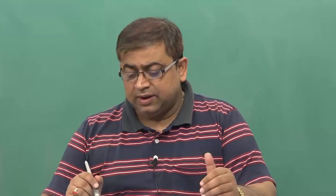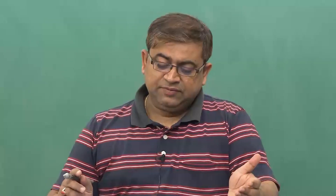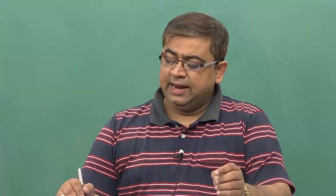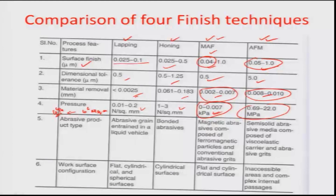Lapping and honing may shatter thin wafers if not properly executed. In the case of MAF and AFM, the processes are comparatively better. AFM does have higher pressure in the mega Pascal range, but magnetic abrasive finishing methods can be deployed where substrate sizes are increasingly small or they lack strength.